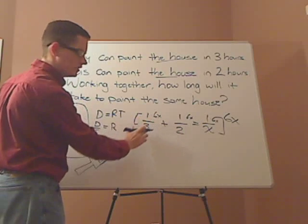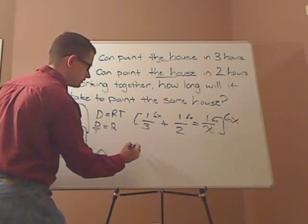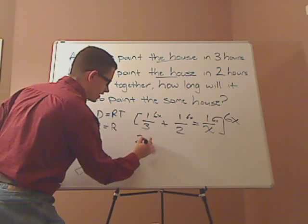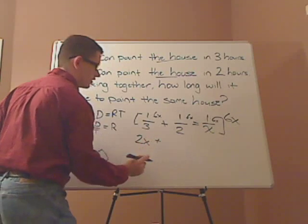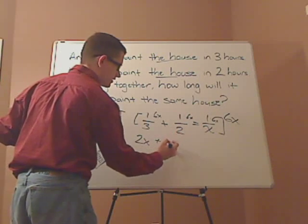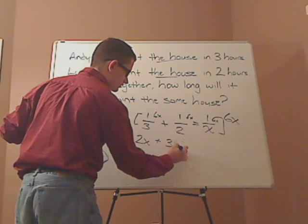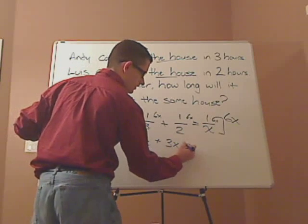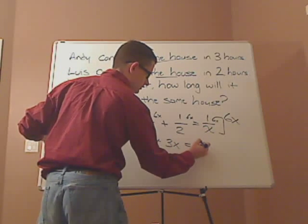When you do that, you have 6X over 3, which is 2X, plus you simplify this. This is 3X, and this is just simply 6.